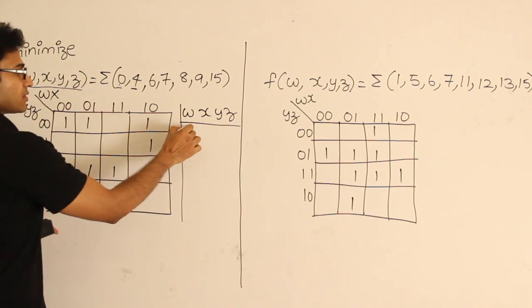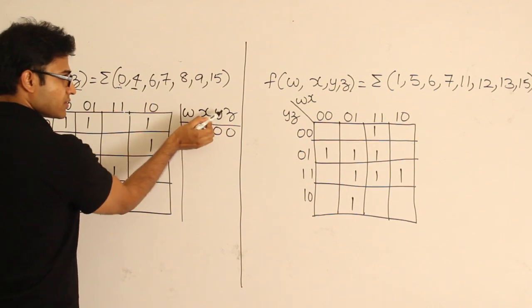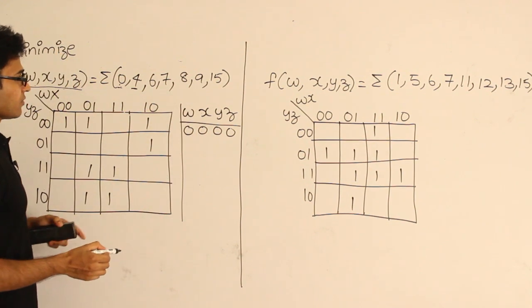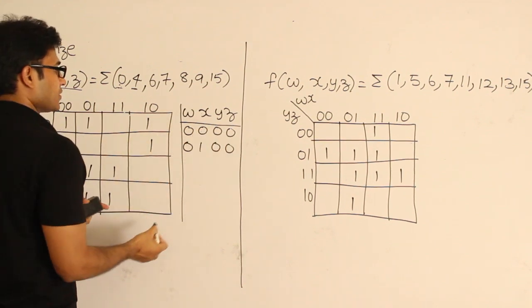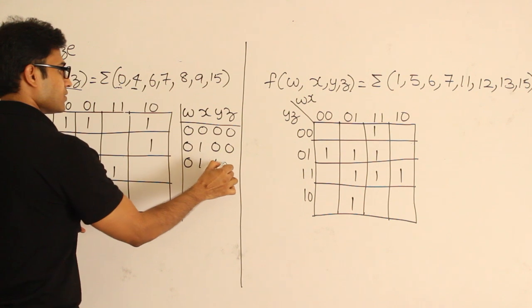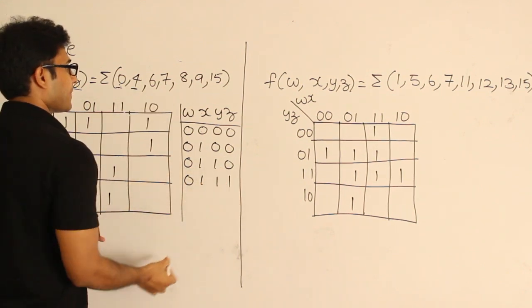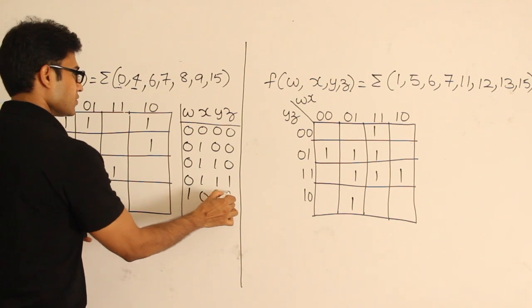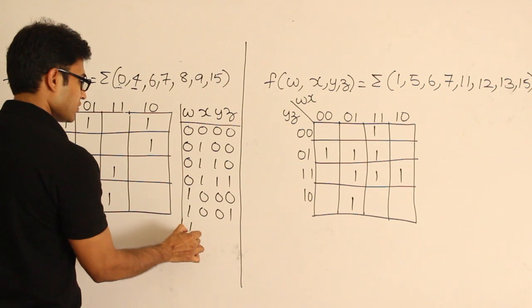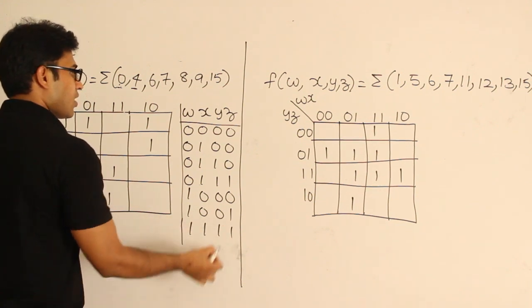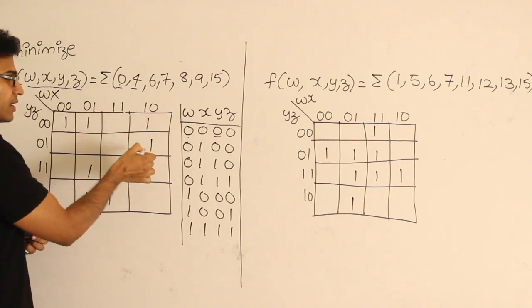So 0 means 0000, meaning W=0, X=0, Y=0, Z=0. And 4 means 0100, 6 means 0110, 7 means 0111, 8 means 1000, 9 is 1001, and 15 is 1111.